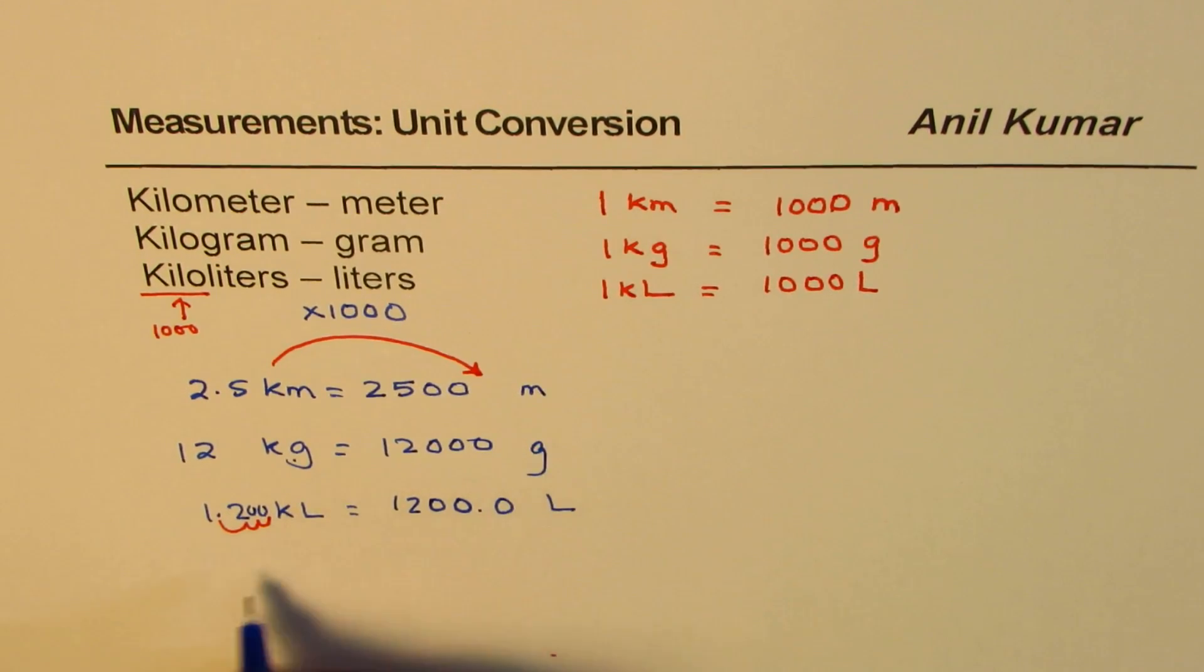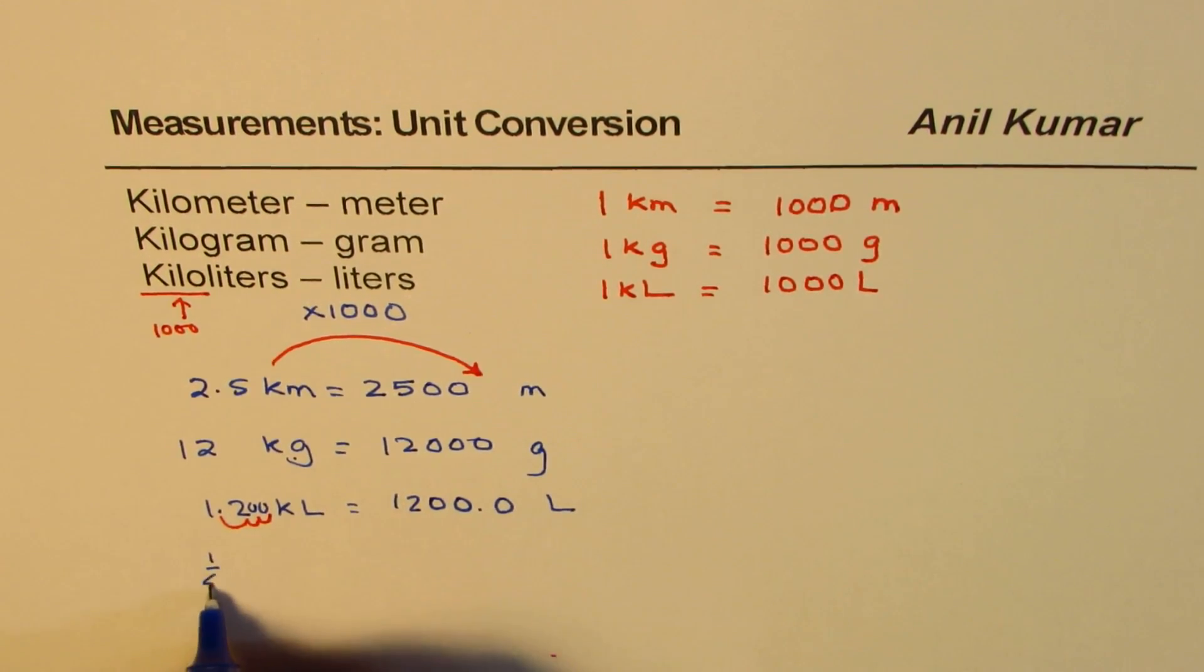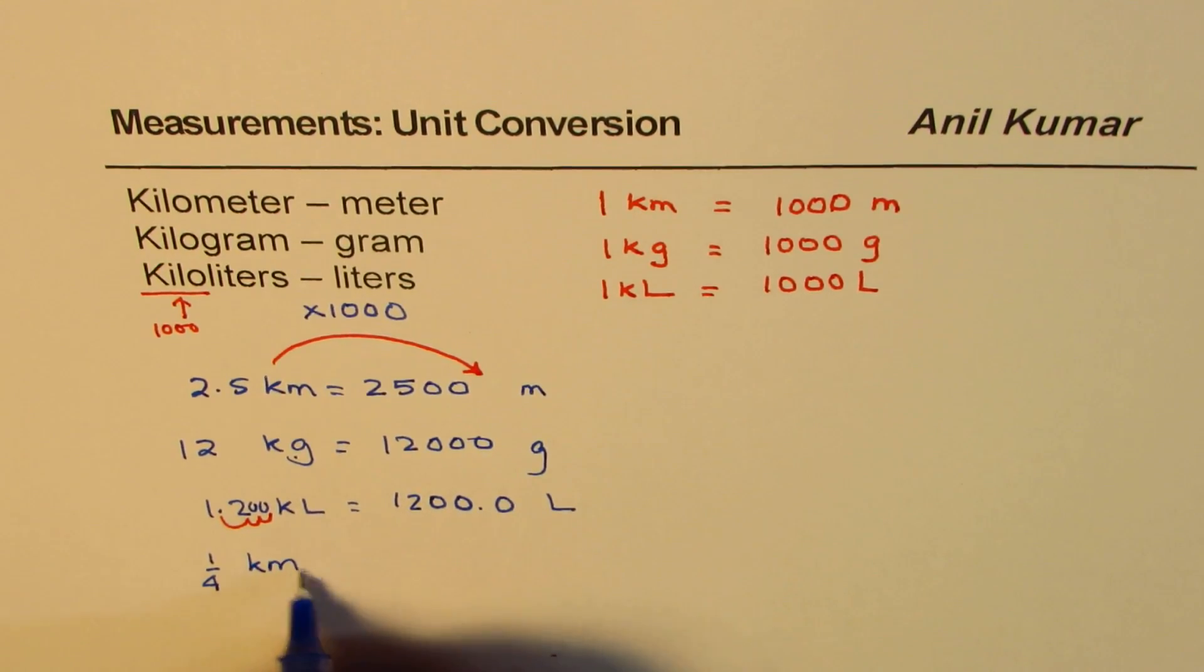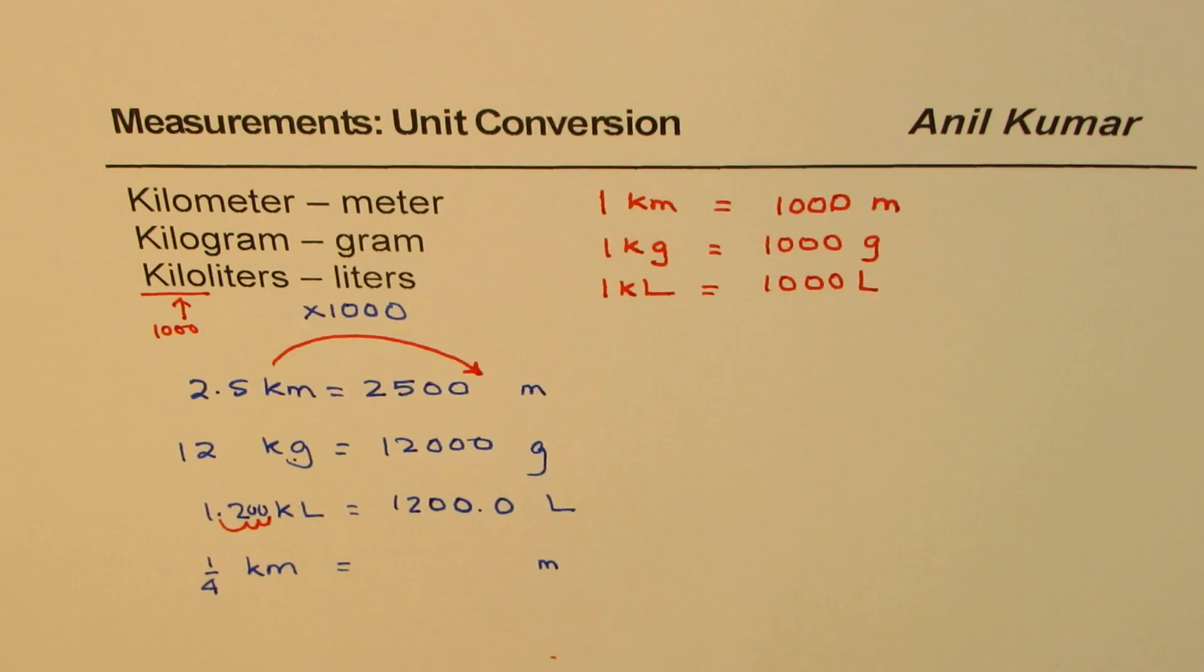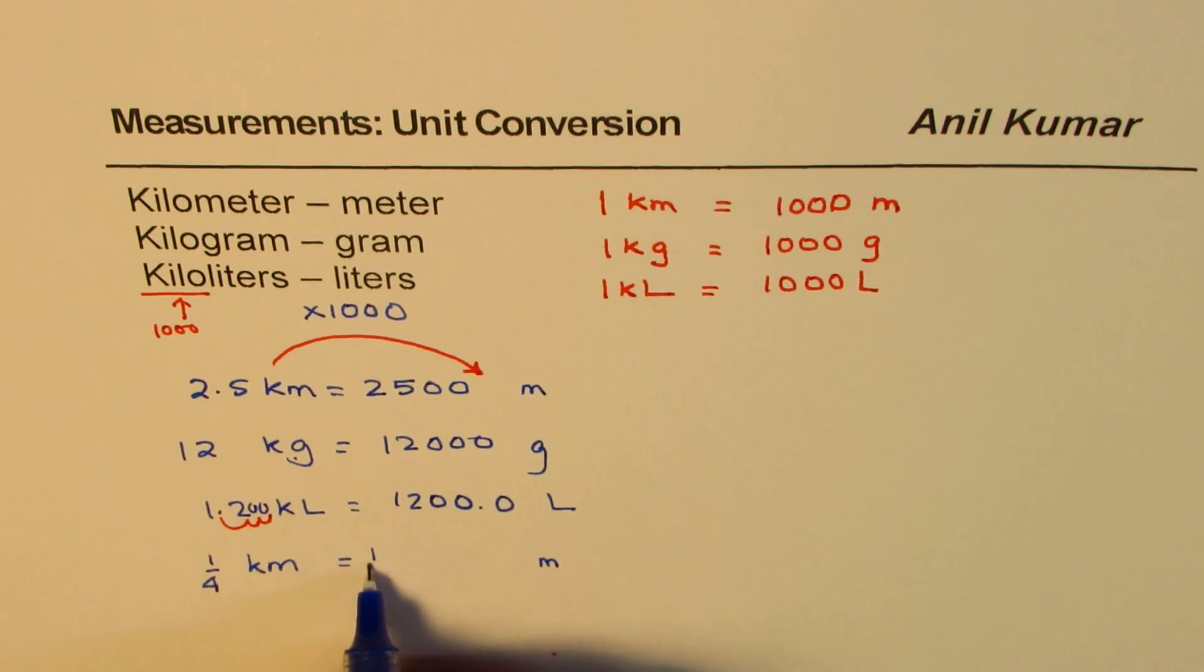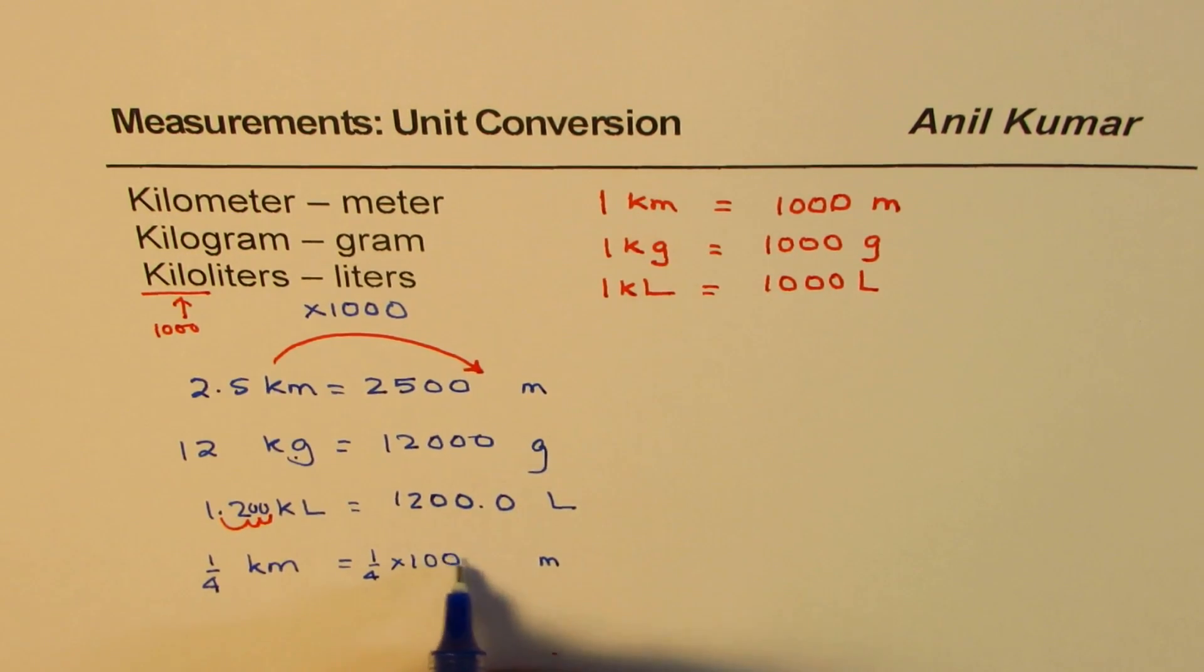Now, let me take some fractions. I could have 1 fourth of a kilometer. You have to write this as meters. And let's do this one first. You can pause the video and solve this. Now, 1 fourth kilometers means 1 fourth of 1,000, right? So multiply by 1,000.